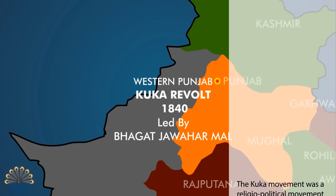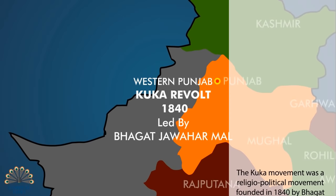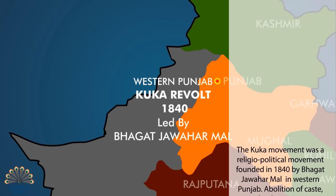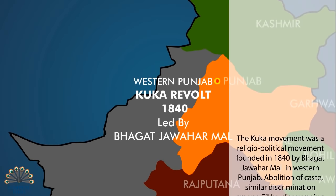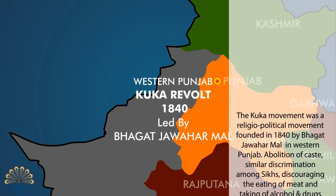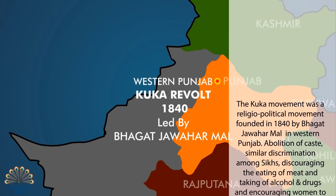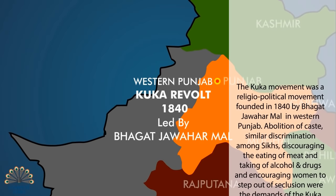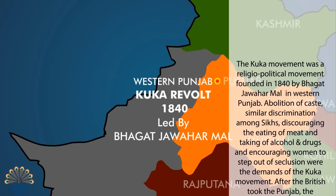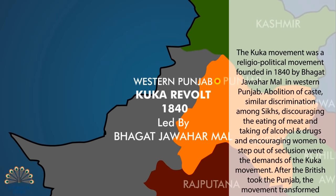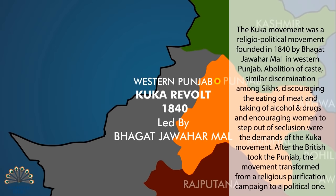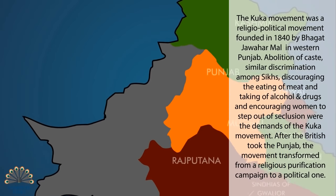The Kuka movement was a religio-political movement founded in 1840 by Bhagat Jawahar Mal in Western Punjab. Abolition of caste discrimination among Sikhs, discouraging the eating of meat and taking of alcohol and drugs, and encouraging women to step out of seclusion were the demands of the Kuka movement. After the British took the Punjab, the movement transformed from a religious purification campaign to a political one.